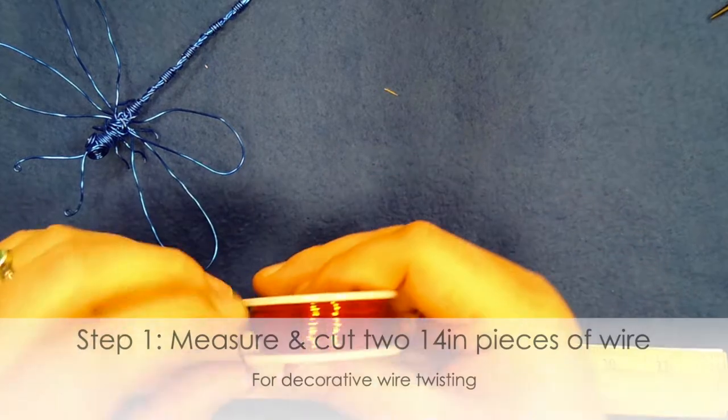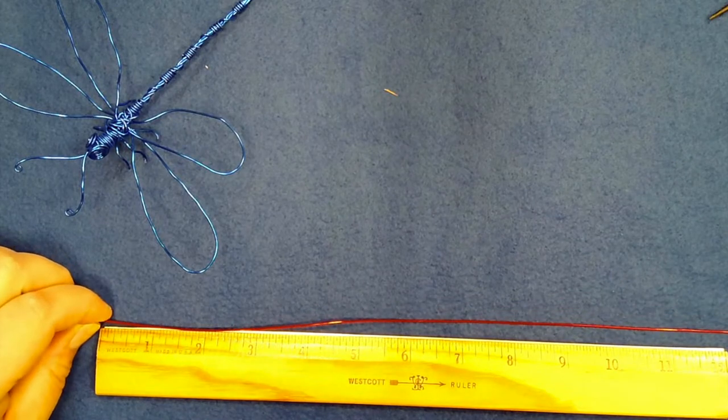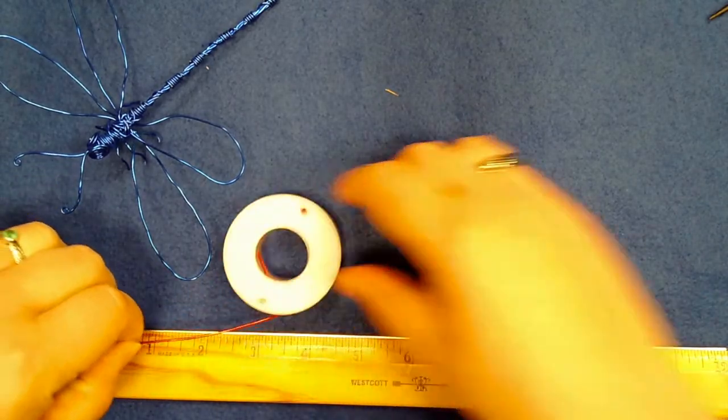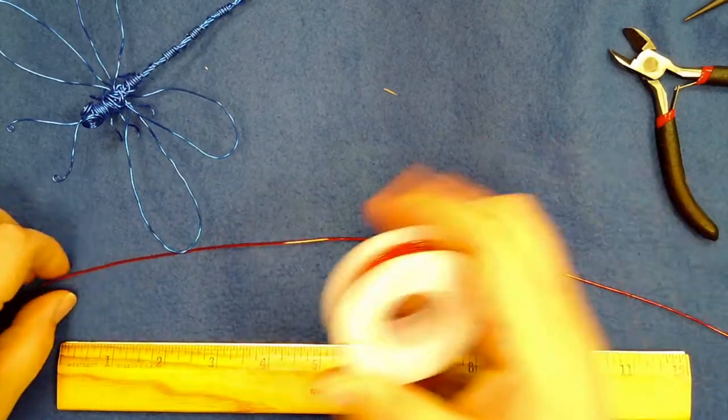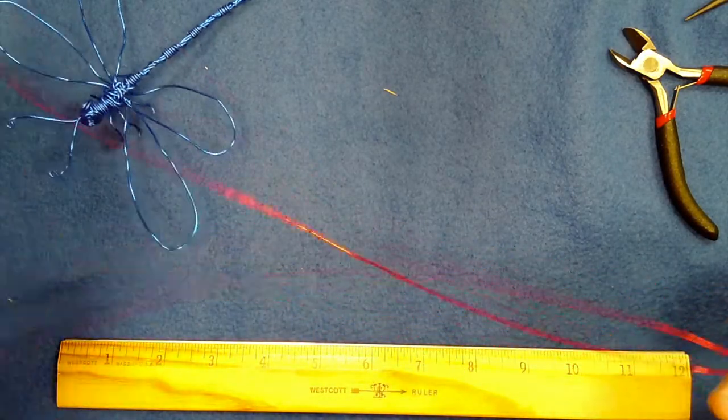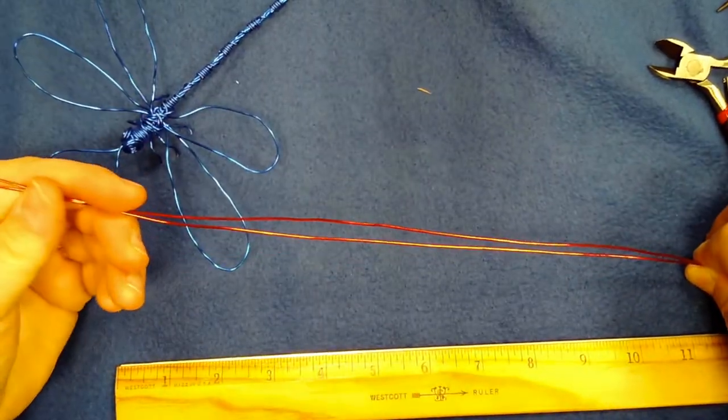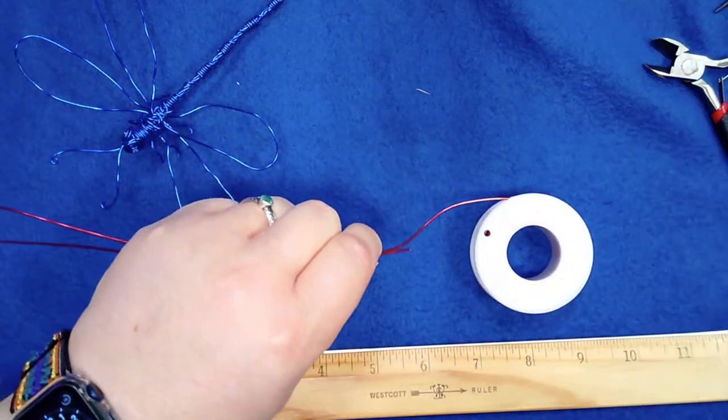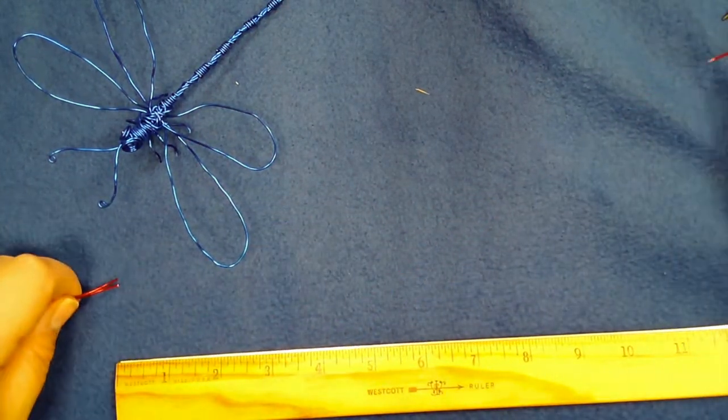So the first step you want to do is you want to take your wire and you want to measure out two pieces of 14 inch wire. So I have 12 inches here. I'm going to use my wire cutters. And now that I have one piece, I'm just going to use the other one to measure out together, so I don't need to have a ruler for both things as long as I have one measured out. I'm just going to pull it from the end here and make a cut.